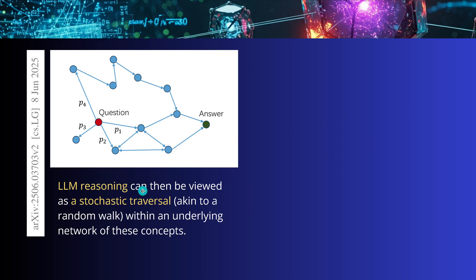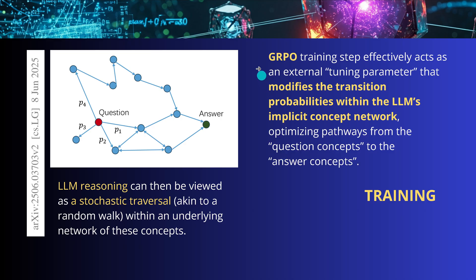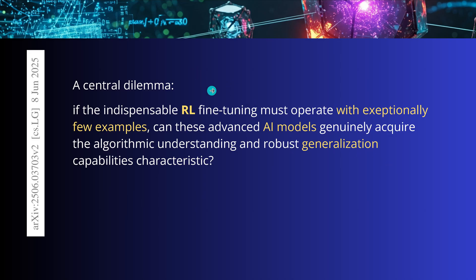The reasoning process is simple: it's a stochastic traversal akin to a random walk within an underlying network of concepts. We want to train it, so we use reinforcement learning — GRPO. It modifies the transition probabilities within the LLM's implicit concept network, optimizing pathways from the question to the answer concept. We face a central dilemma: we operate with exceptionally few examples, especially in theoretical physics. The question is whether this AI model can genuinely acquire algorithmic understanding for robust generalization on unseen data.